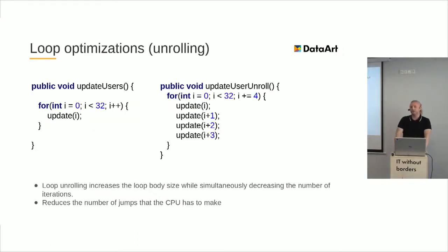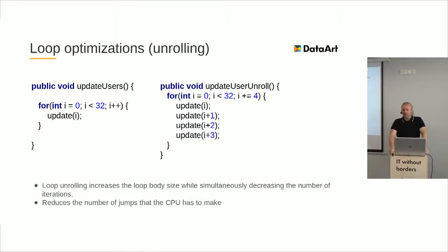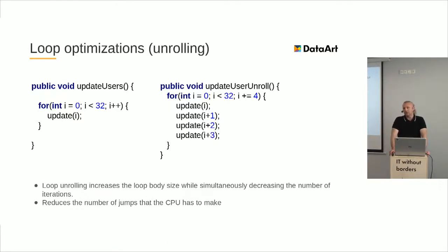Now let's talk about these optimizations. First, I'd like to discuss loop optimizations. The first is loop unrolling — a very basic optimization whose main idea is to minimize the number of iterations in the loop by copy-pasting the body of the loop and decreasing the number of iterations. Why do this? Because internally on the CPU, when control flow changes, the CPU has to reload the pipeline and jump to another instruction, which is costly. Loop unrolling decreases the number of such jumps, though the disadvantage is that the code gets bigger.